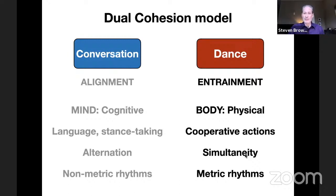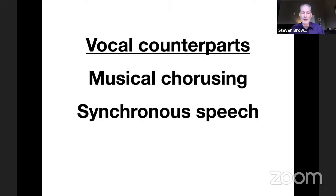Now, of course, this is not just about the body—there are also vocal counterparts. We just heard the Black Eyed Peas, and so musical coursing is one vocal counterpart. There's also synchronous speech that occurs at political rallies. So there are definitely vocal versions of this kind of synchrony beyond just the body and forms of dance.